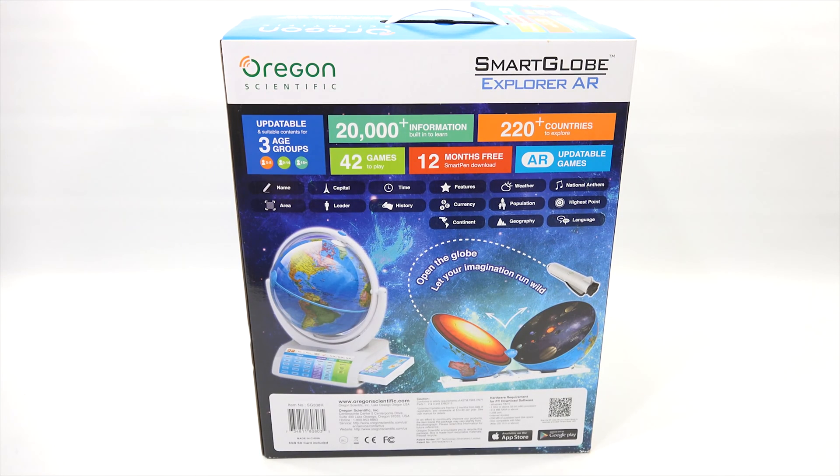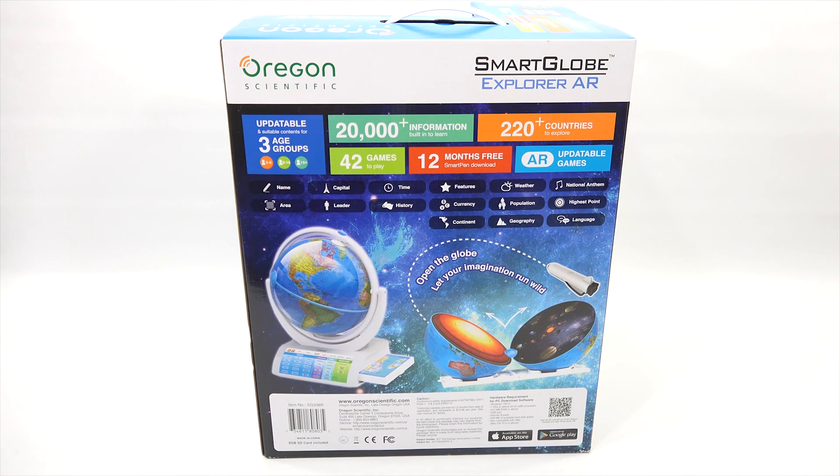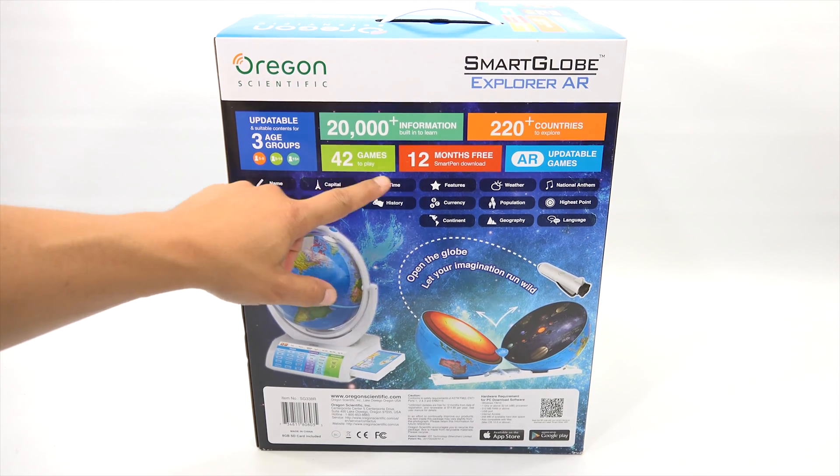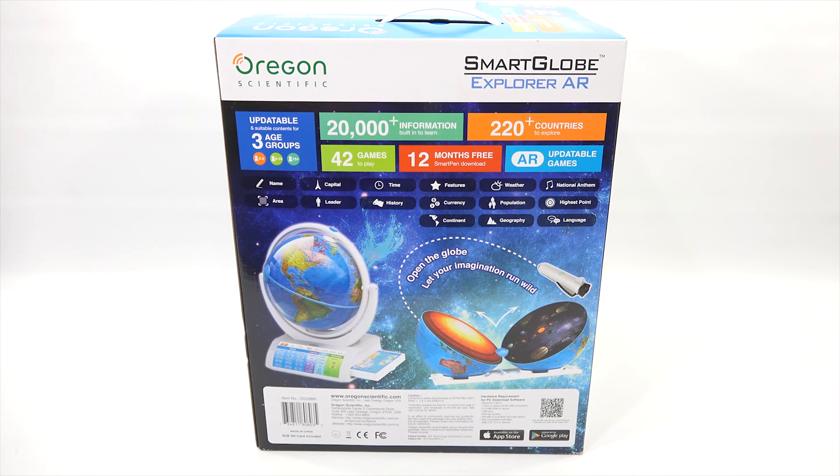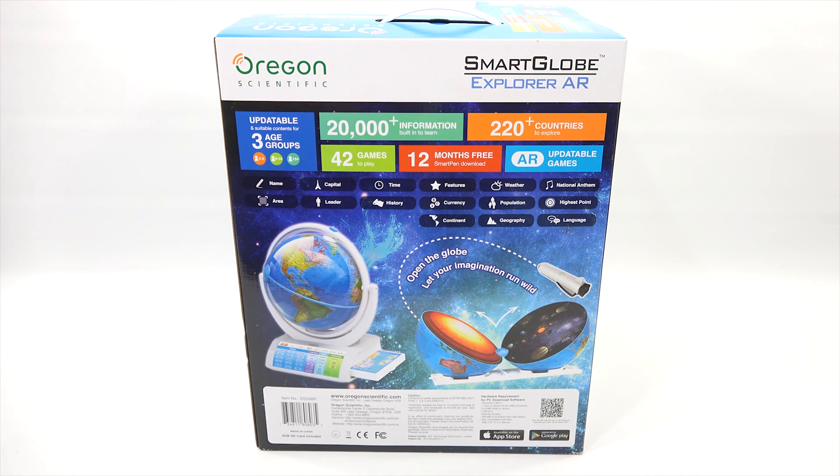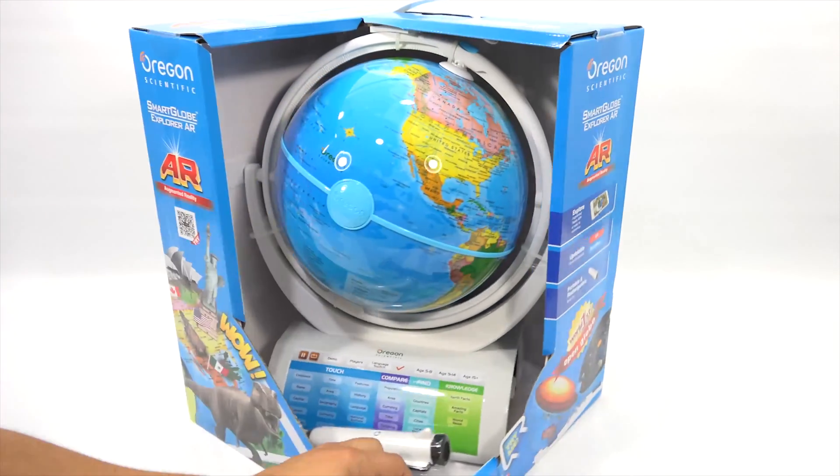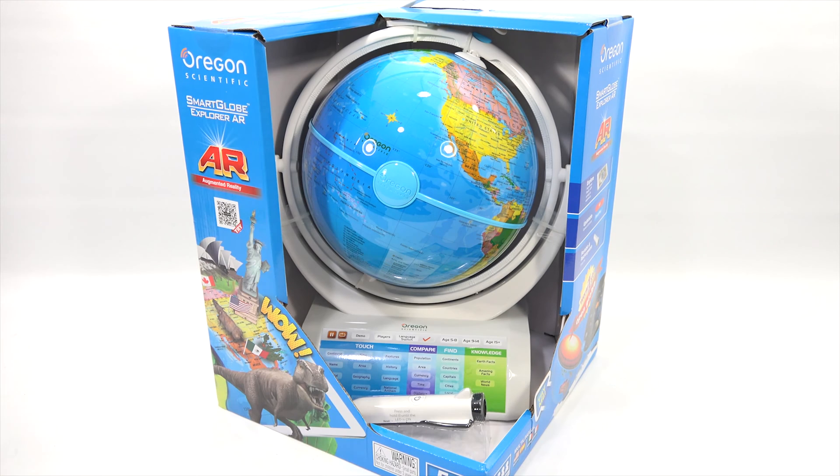And this is really the panel that kind of goes over everything here. Updateable for three age groups. Look at that. 5 to 8, 9 to 14, and 15 plus. Plus, there's 20,000 pieces of information built in. 220 plus countries to explore. 42 games. 12 months free smart pen download. And the games are updatable. Look at that. It opens up so you can look at the Earth's core and then our universe. All right. So I'm excited to check this out, as you can tell. When I come back, then I will have it out of the box and we will learn about this globe.